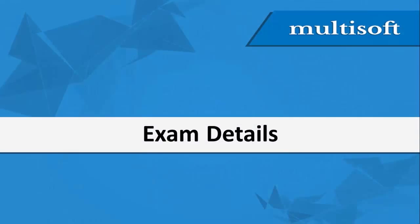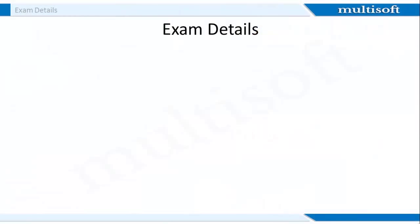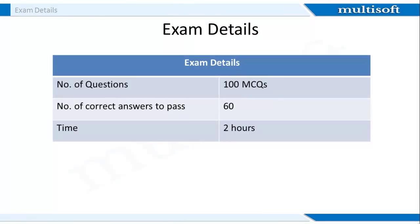Let me now share the exam details with you. Taking certification exams at Autodesk University is easy. You just need up to two hours to finish each product exam. The exam comprises 100 multiple choice questions, and you can make two attempts to pass with no requirement of pre-registration.